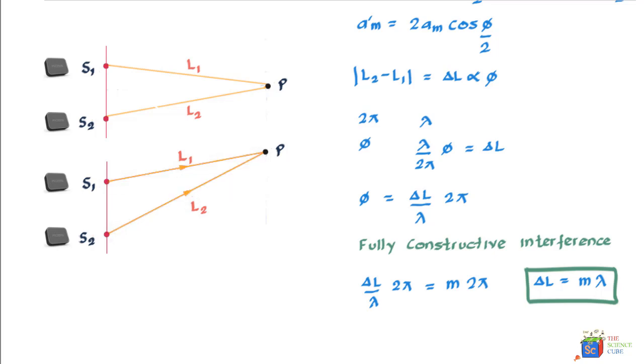Fully destructive interference will happen when φ is an odd multiple of π, or when φ = (2m + 1)π, because at these φ values, the amplitude becomes zero, which means destructive interference. For fully destructive interference,